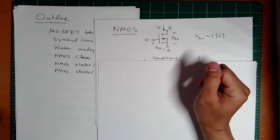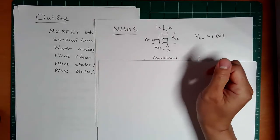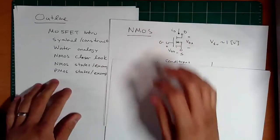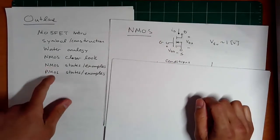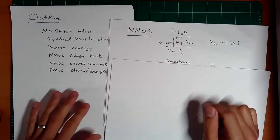Hi, this is ET370, Lecture 7, Part B, the second part of our two-part lecture, and here we're going to look at the NMOS and PMOS states and do a few examples for each.